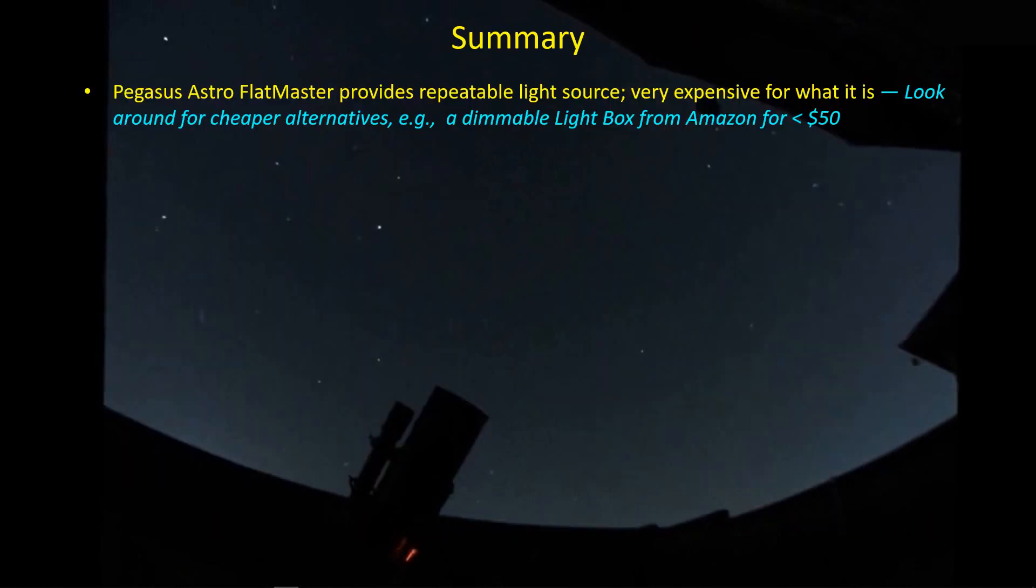Okay, so in summary, I'm using the Pegasus Astro Flatmaster. I have the larger Flatmaster so that it covers the aperture of my C925 and also therefore the smaller aperture refractors that I have. The Flatmaster is a good piece of hardware.